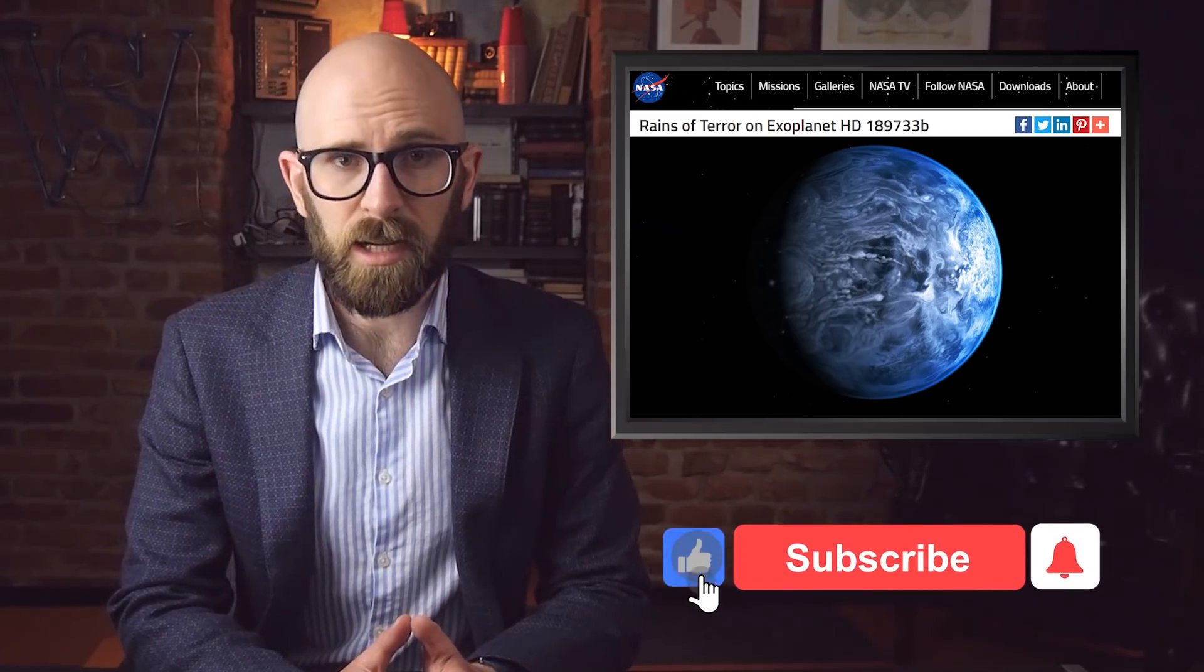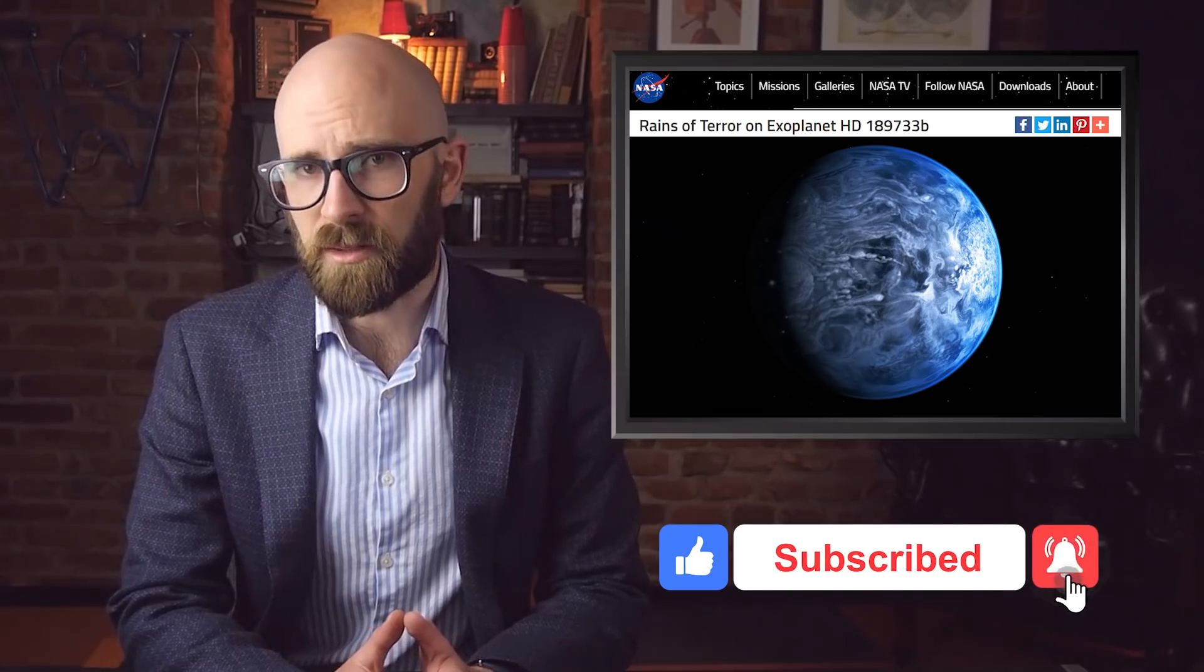6. Glass Rain. Over 64 light years from Earth, you'll find HD 189733 b, an exoplanet that has some of the worst weather in the universe. Imagine winds that reach speeds of 5,400 miles per hour, and when it rains, you're not being pelted with water, it's shards of glass.